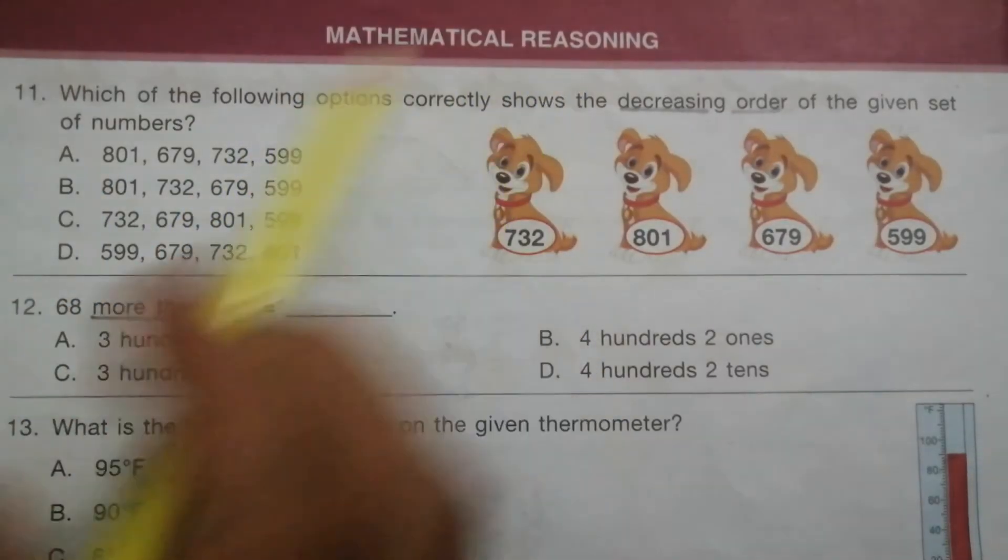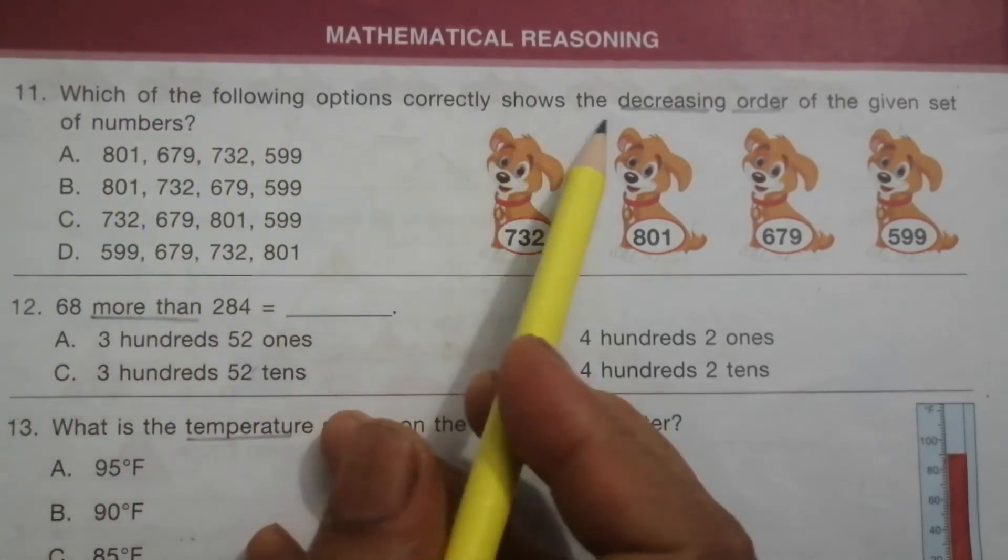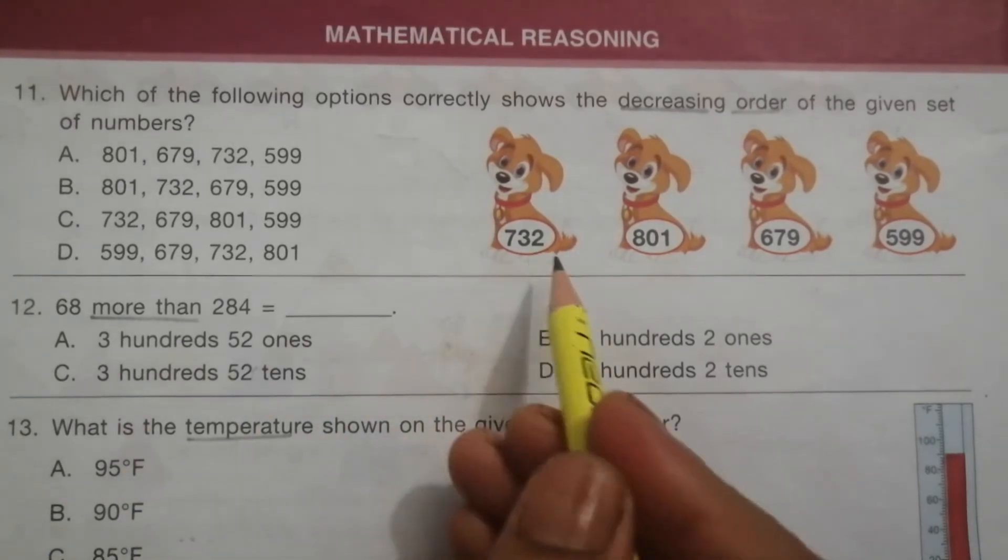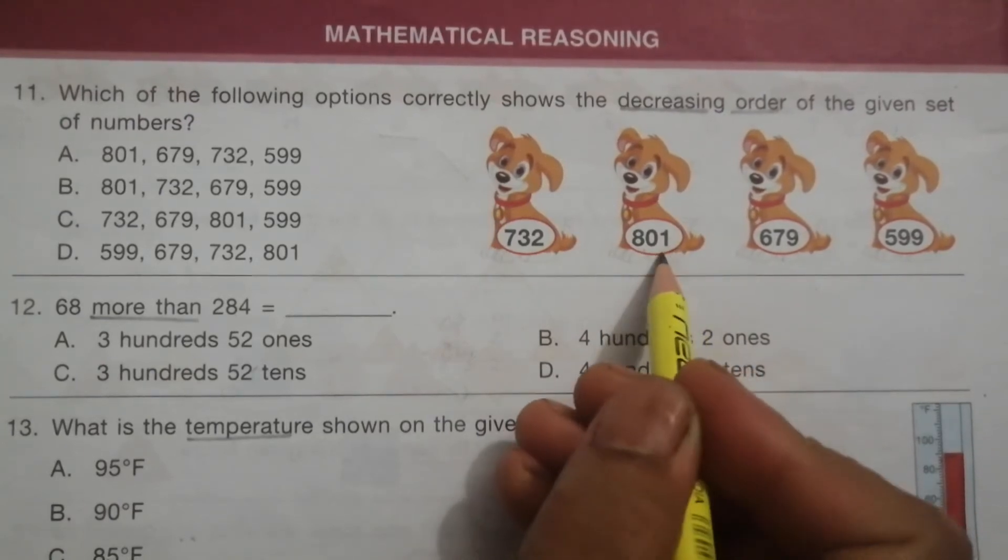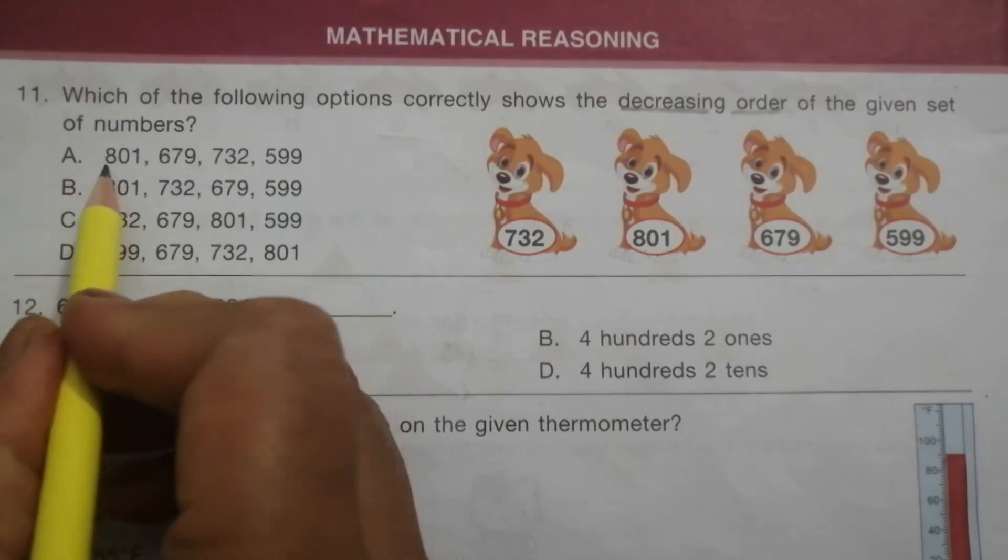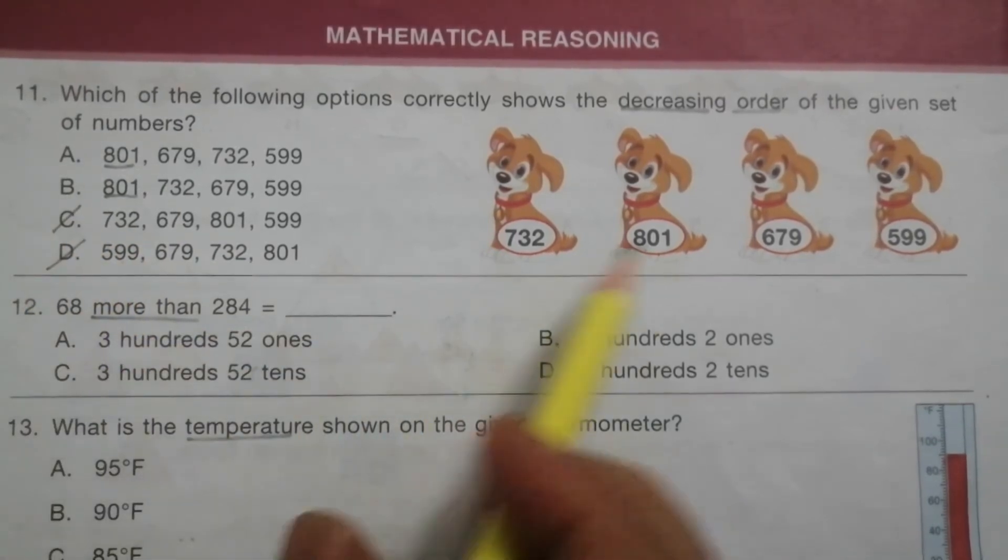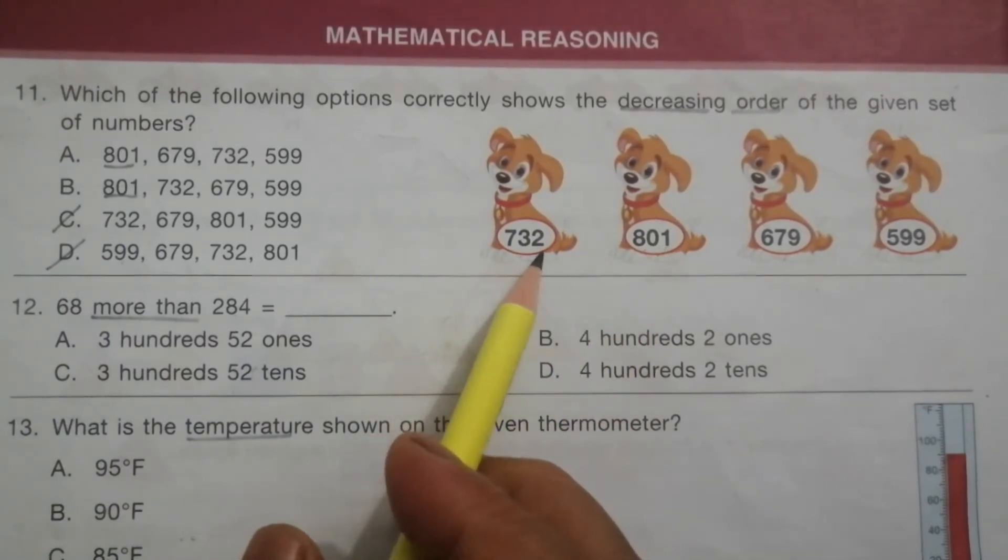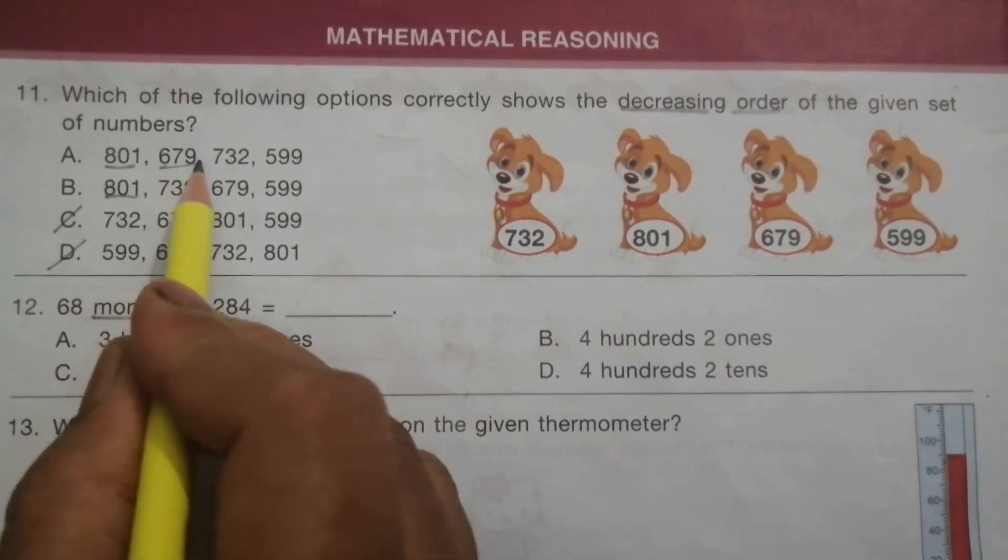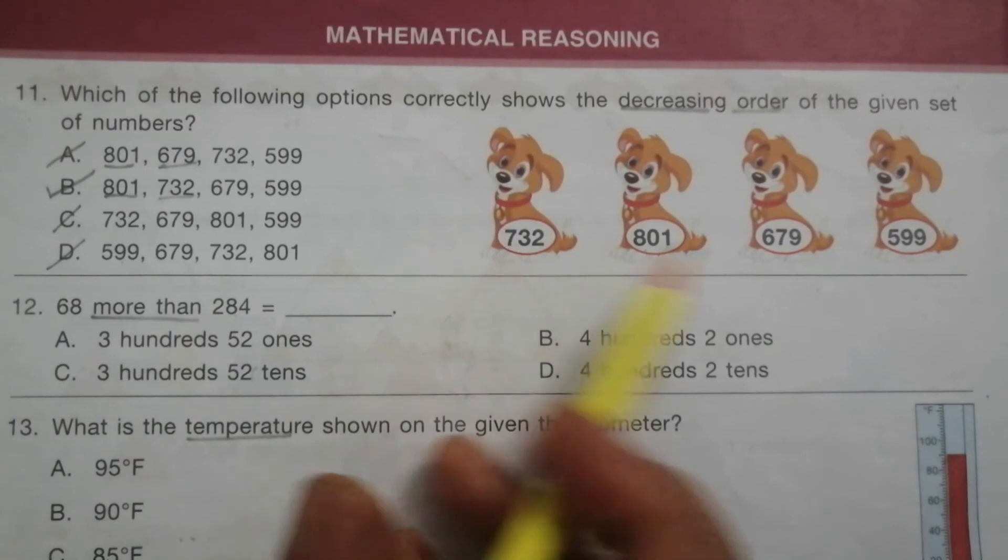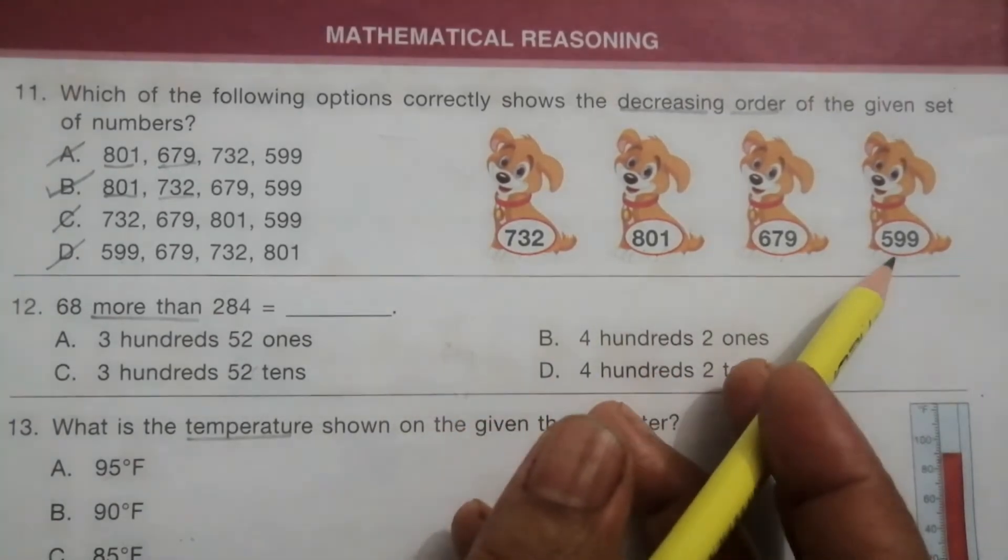Next topic is mathematical reasoning. Problem 11: Which of the following options correctly shows the decreasing order of the given set of numbers? Decreasing order means we arrange numbers from highest to lowest. The highest number is 801, so this is first. In A and B, first is 801, but C and D are different so these are wrong. Second highest is 732. In A, second is 670 so this is wrong. In B, second is 732. So B is the answer.